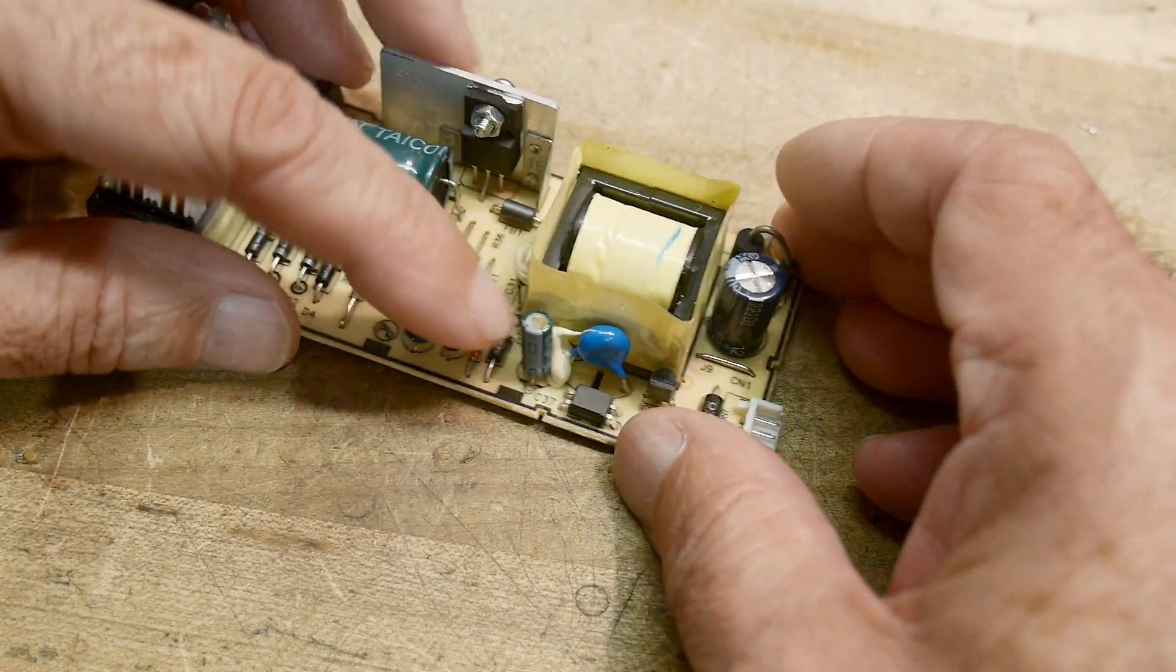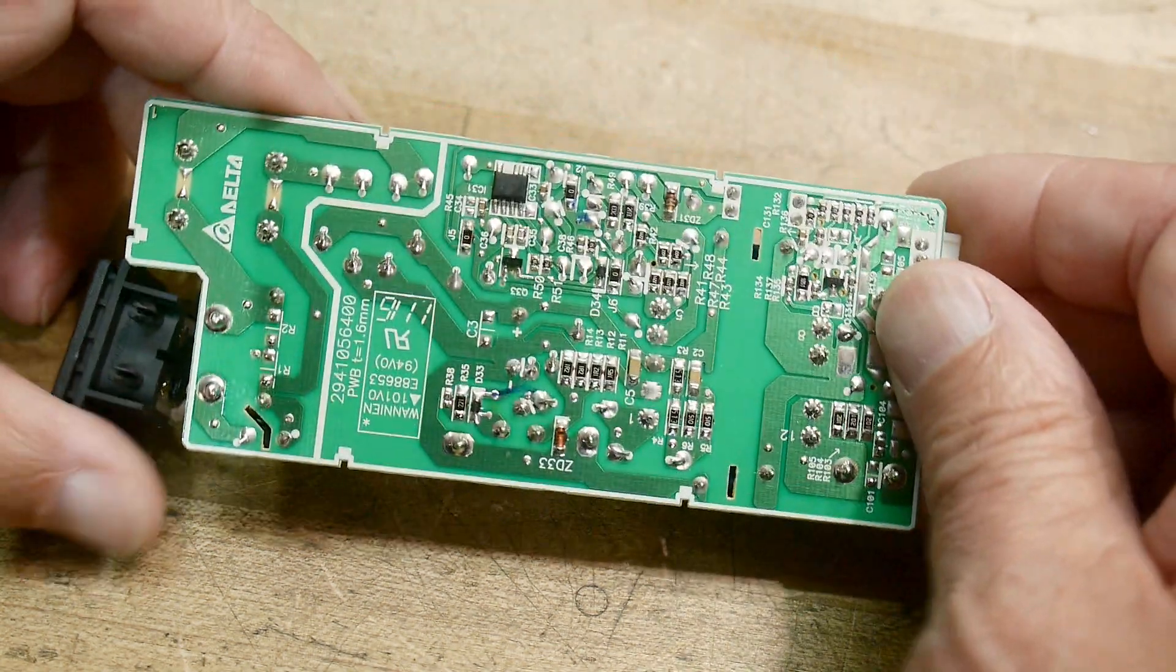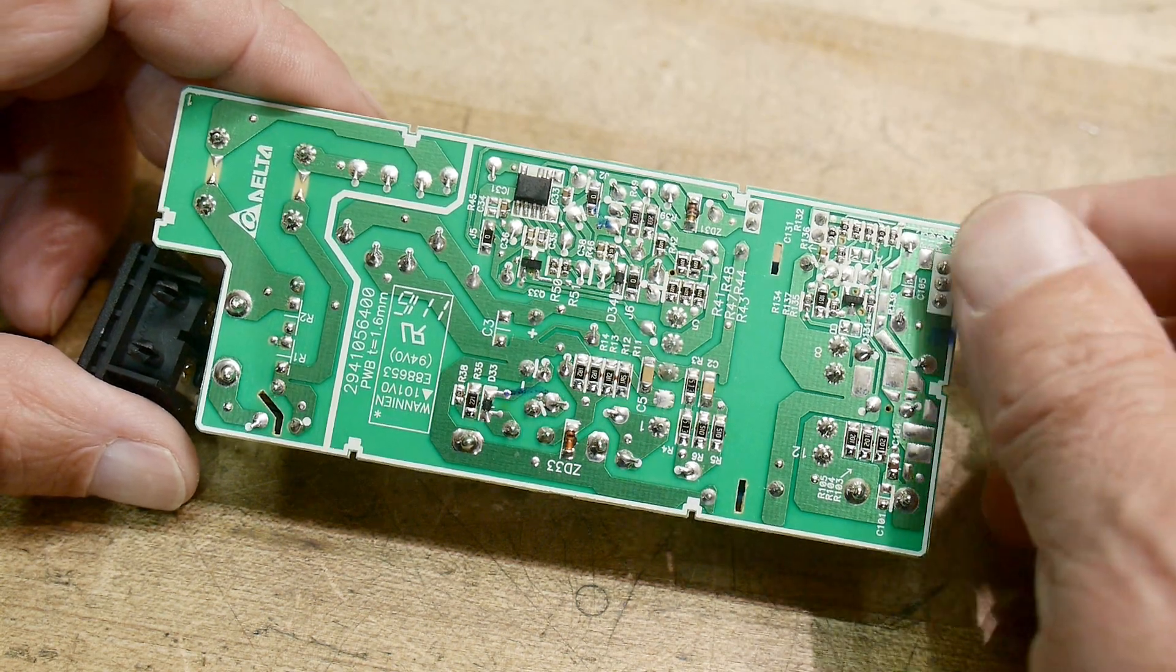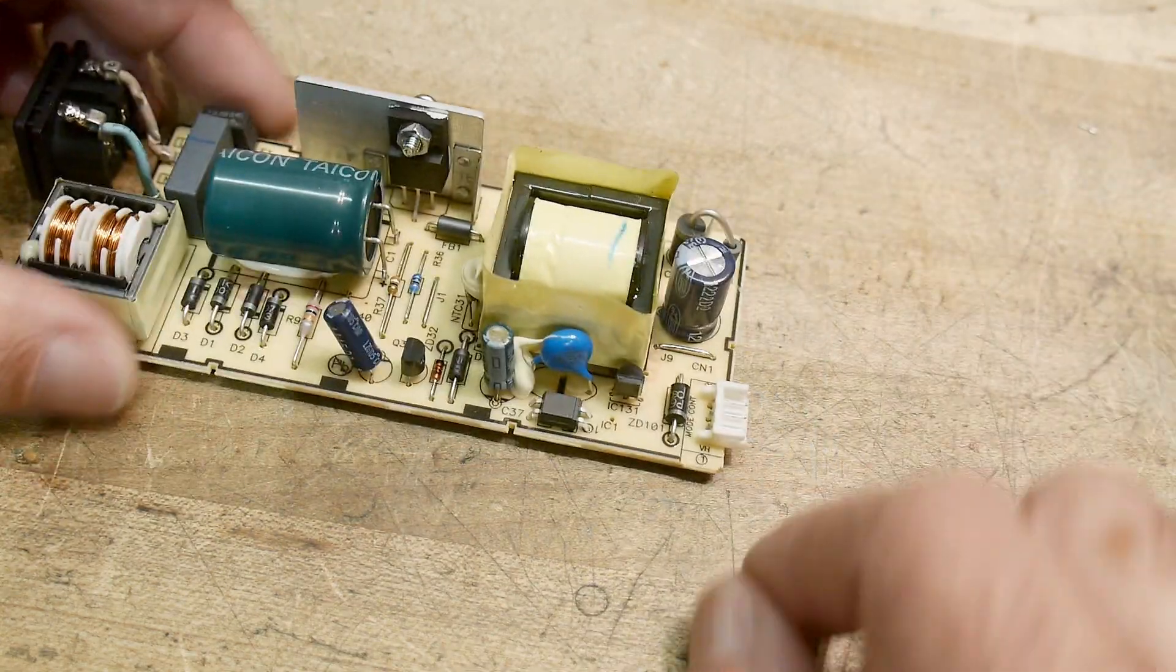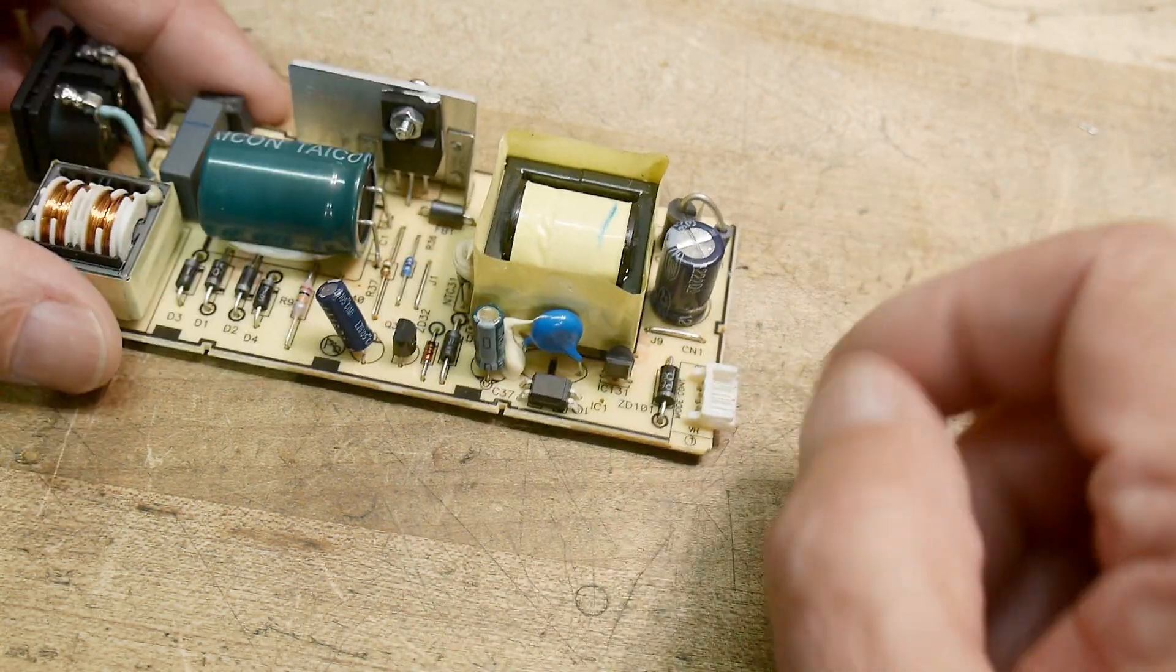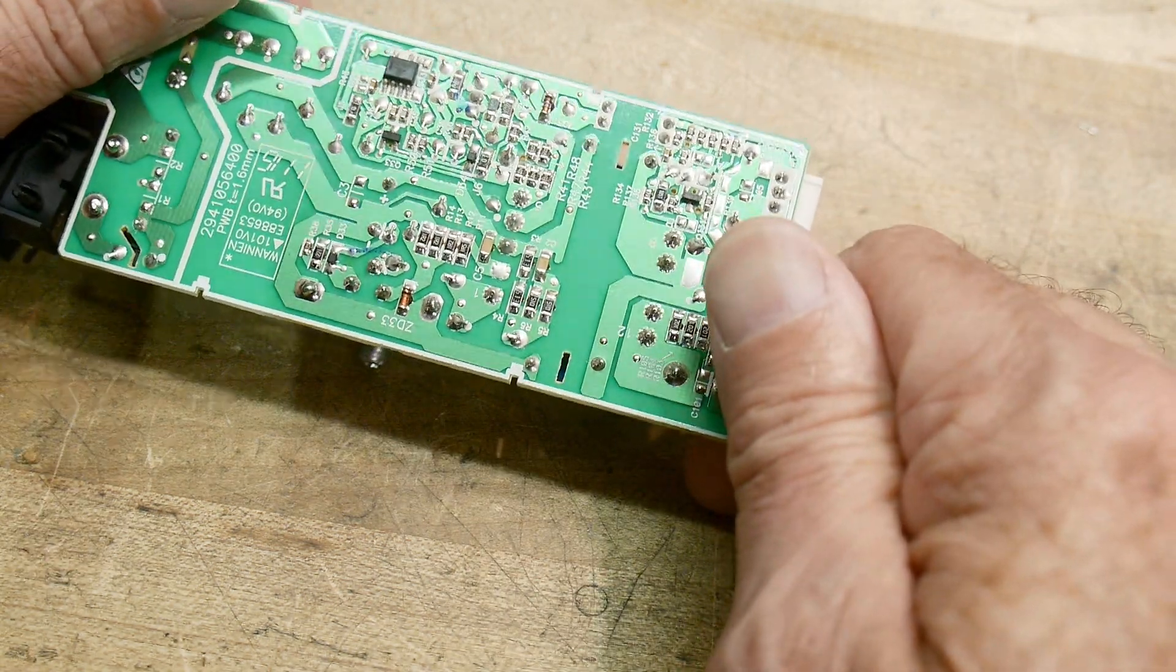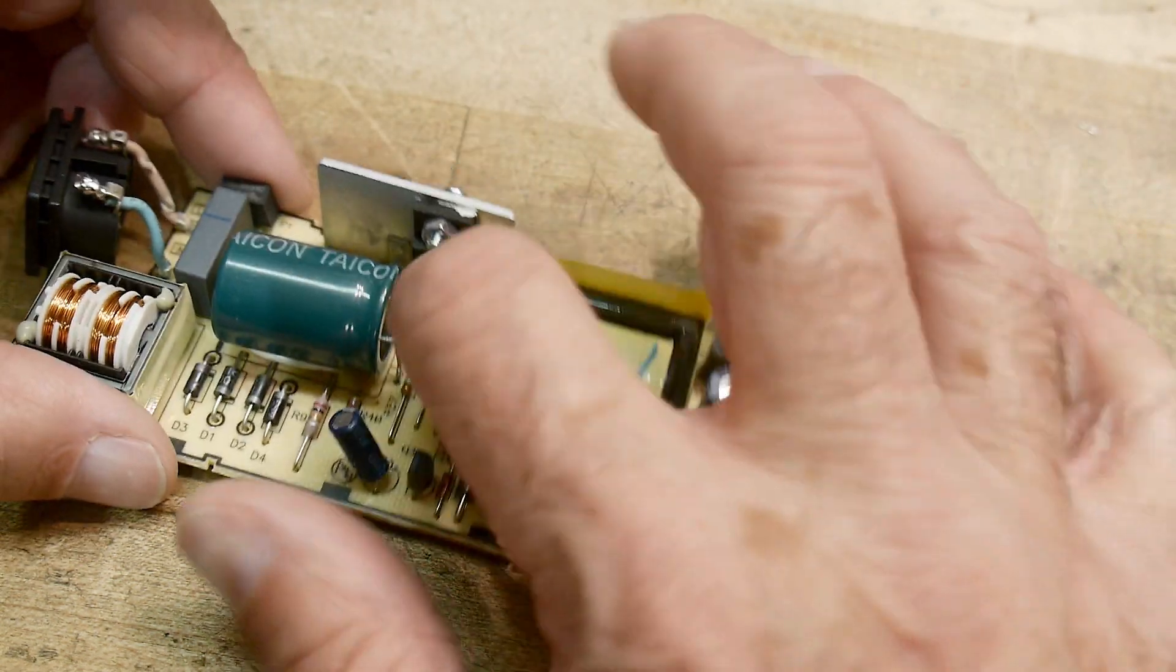And then here's the switching FET. Let's see if we can find... here's the IC on the bottom that does everything, that's where all the magic happens. Does the switcher for the FET here. Here is the optocoupler that feeds the signal back in, and here's a big transformer to change the voltages.